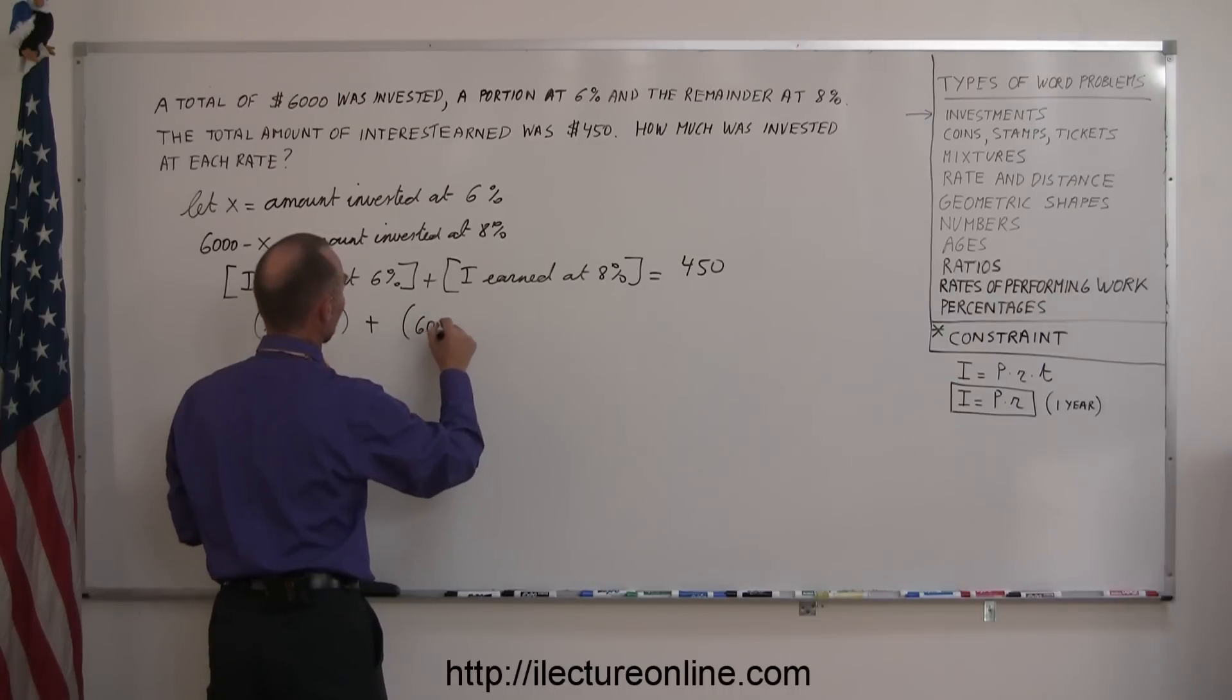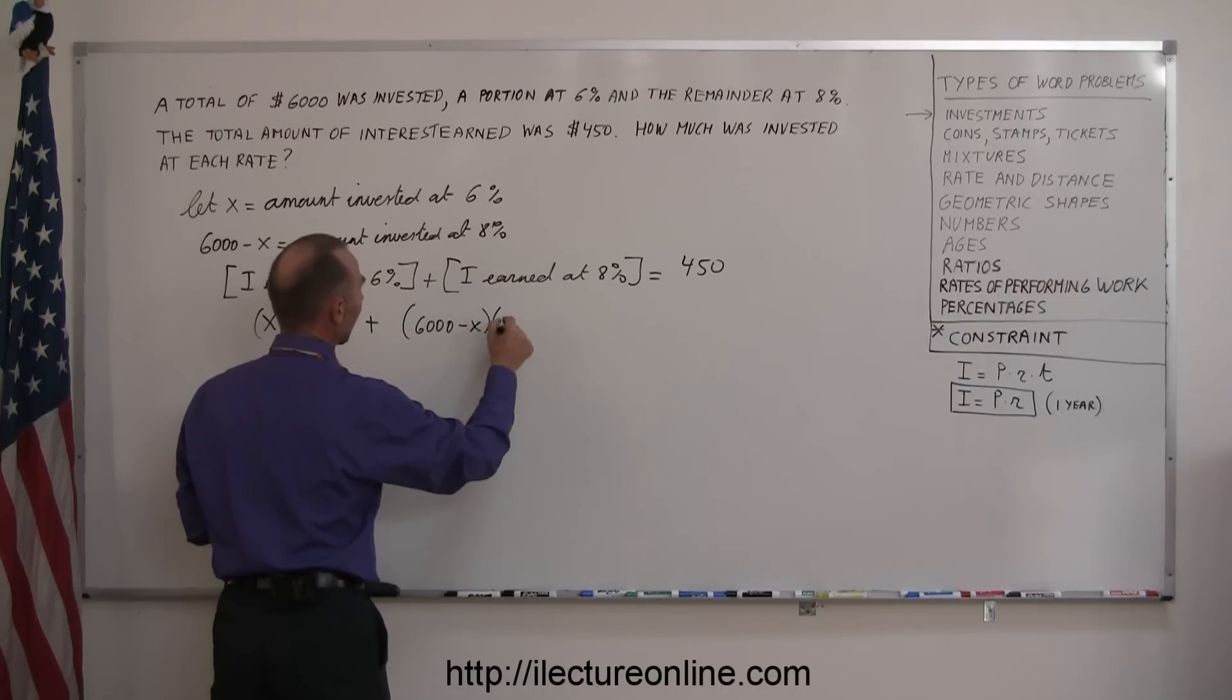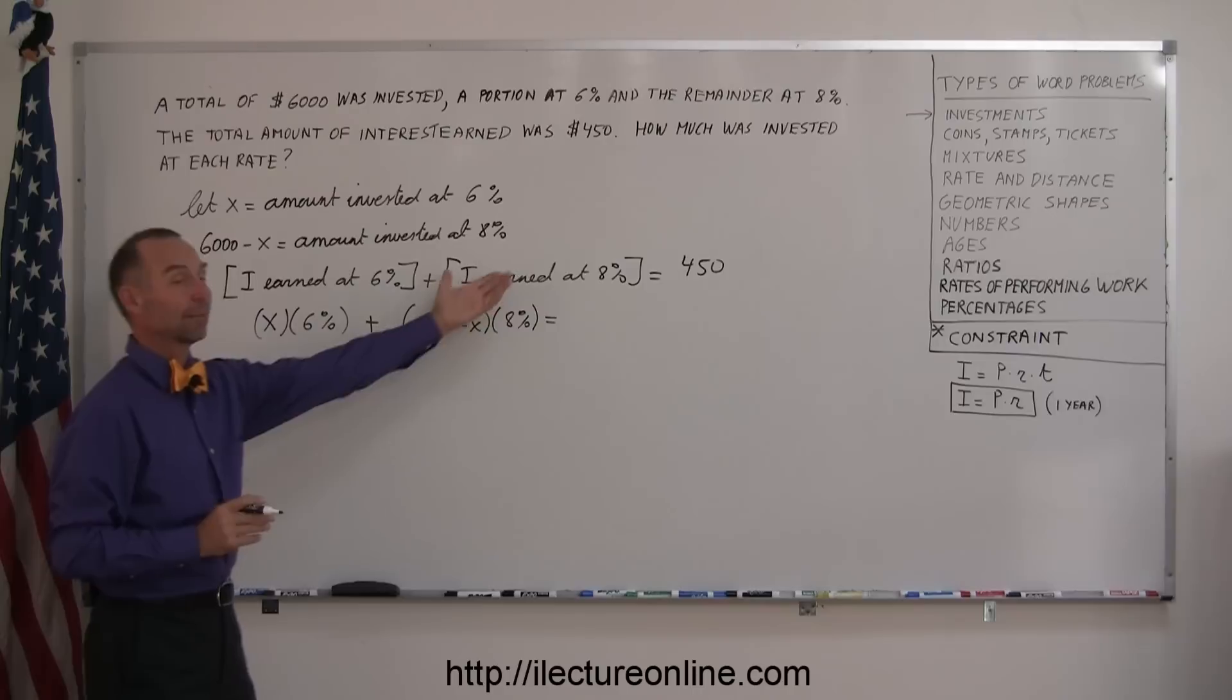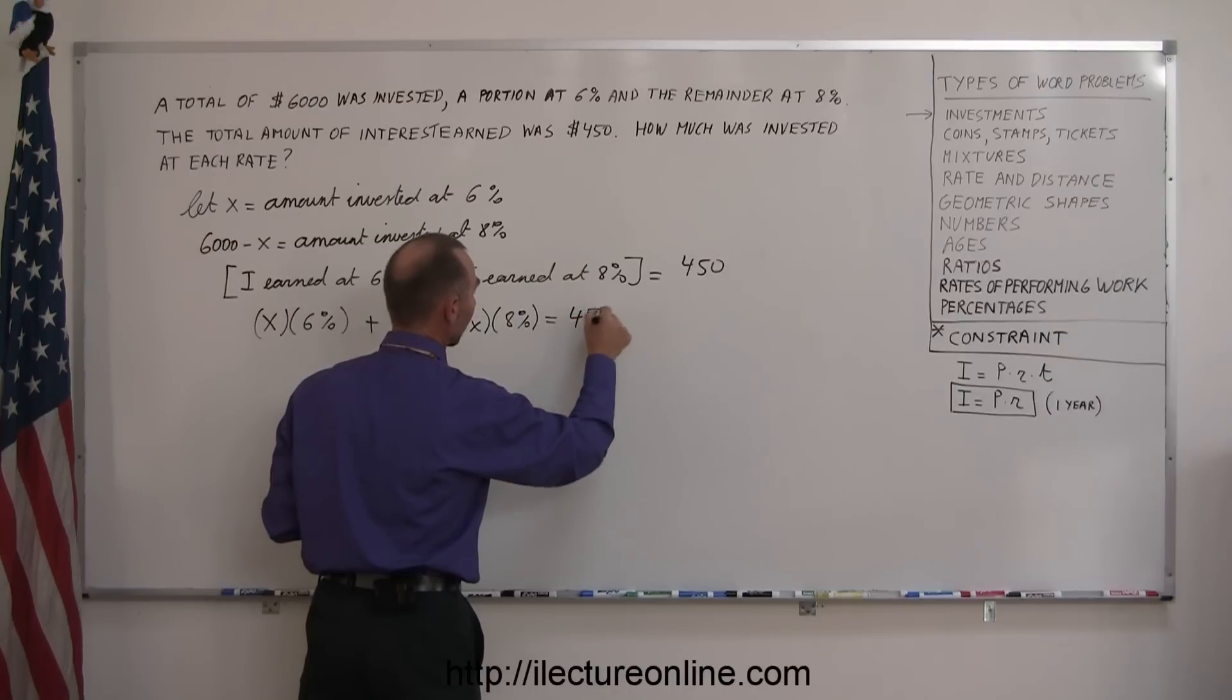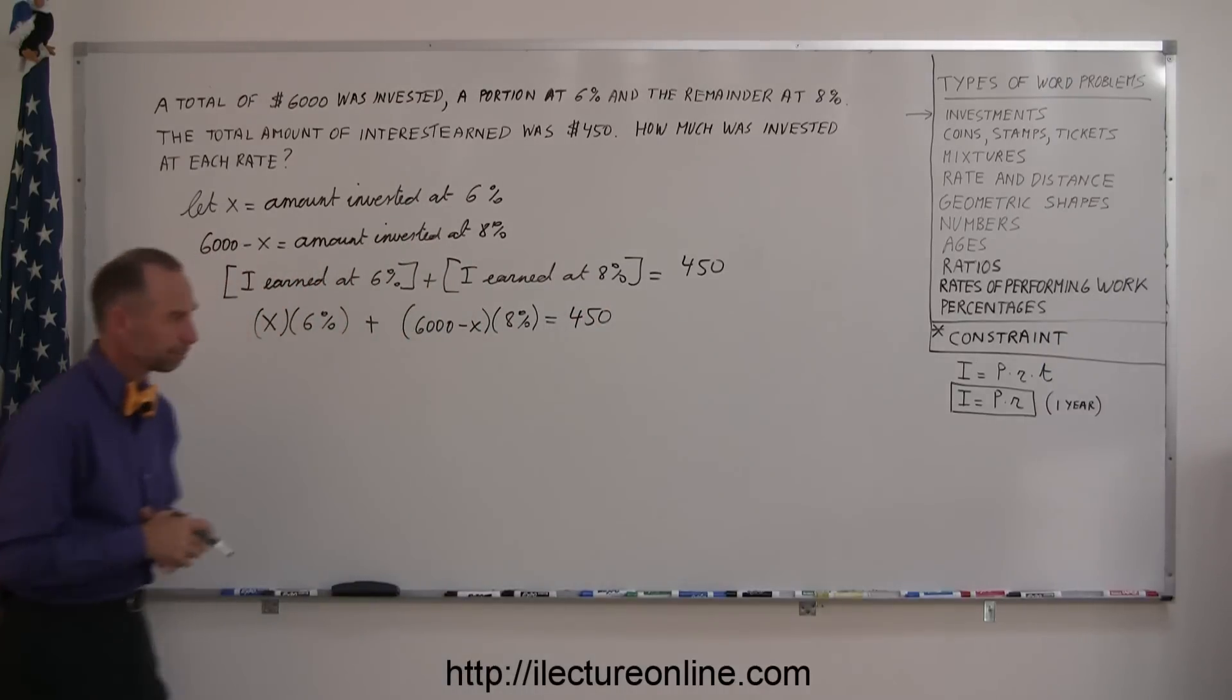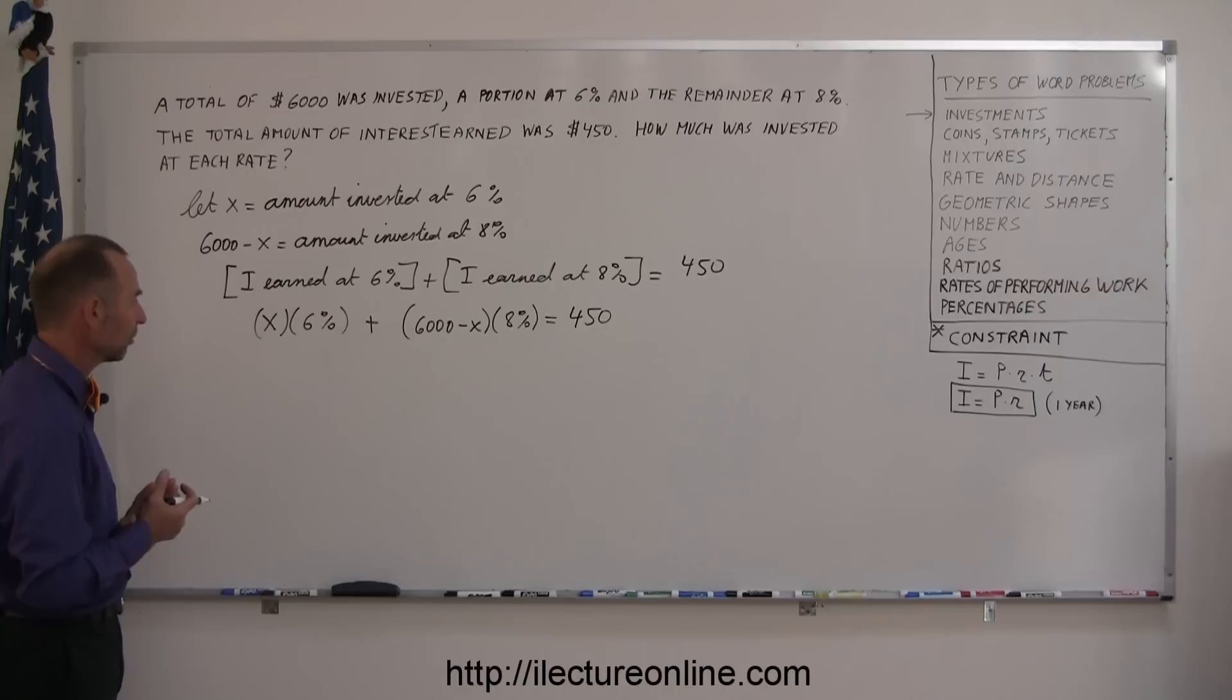So $6,000 minus X times 8% is the amount that I've earned at 8%, and when I add those two together, I should get $450 of earnings. Okay, now I'm ready to go ahead and solve this equation.